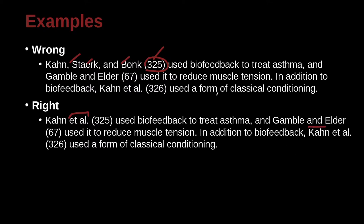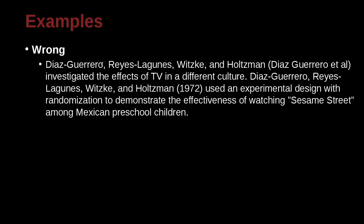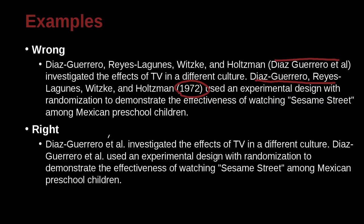Down here we've got a problem with Khan et al. — that's okay, because with three or more authors we use 'et al.' Then we have Diaz, Guerrero, Rees, Languns, Witz, and Holtman — but we're repeating all the names again, which is strange, and we also have a year, which is messed up. So right away we use 'et al.' because we have four authors — three or more means 'et al.' even from the beginning. Again in the second sentence, 'et al.' — we don't need to write them all out. And we do not include any dates in MLA; we do not include the year.